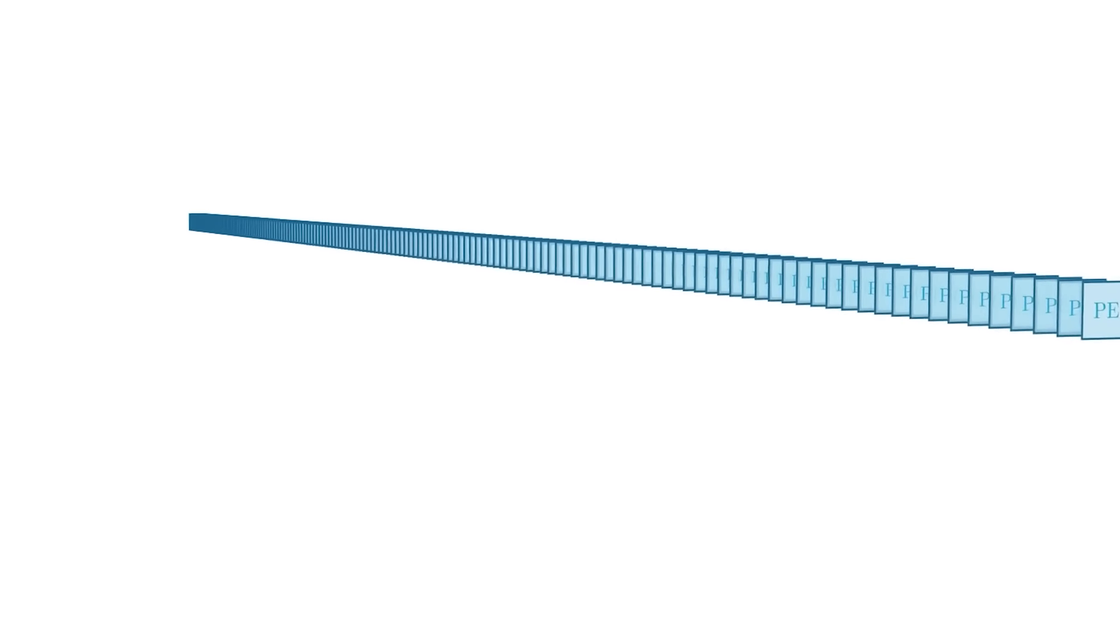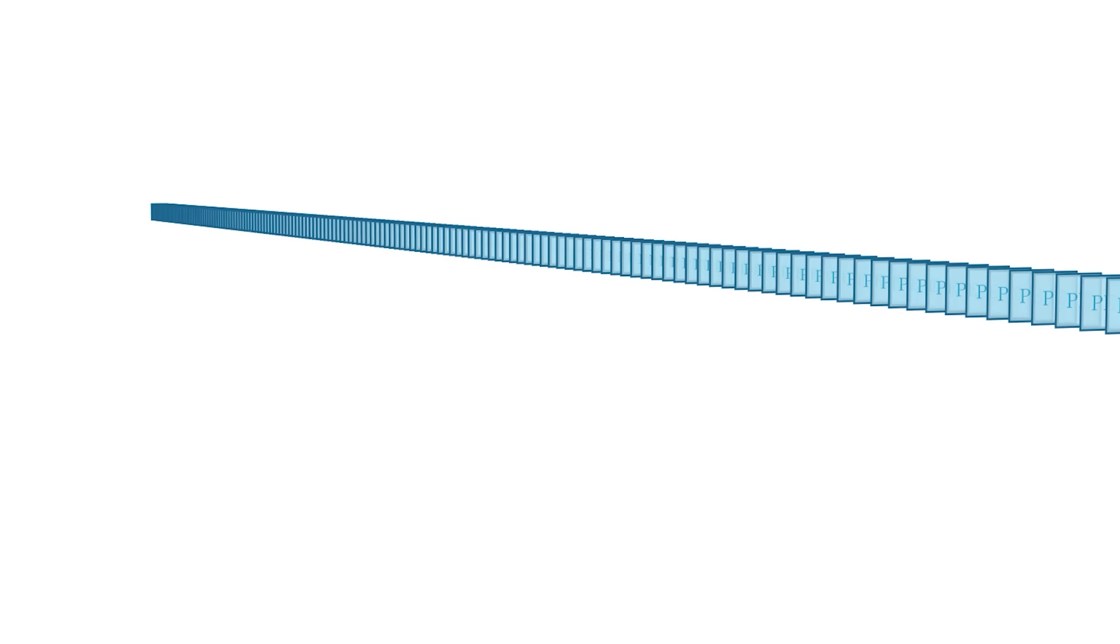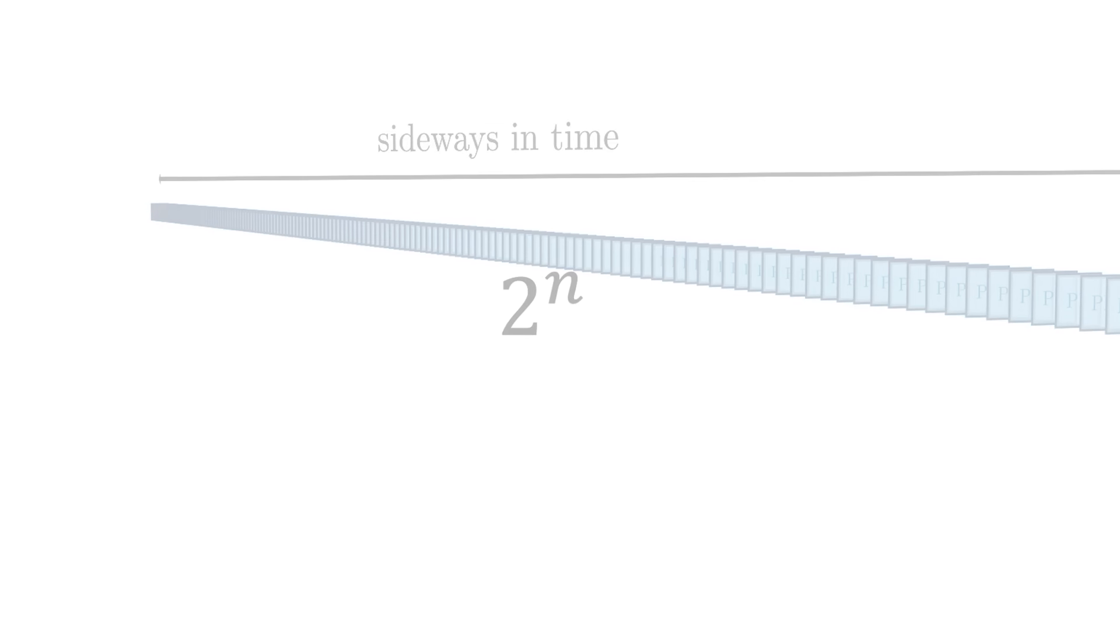We'd like to put this into practice and employ sideways-in-time computation. We want to solve a problem that requires a lot of trial and error, say with an input space of n bits and a function that doesn't have a good heuristic, so there's nothing better than trying out all the 2 to the n possibilities.